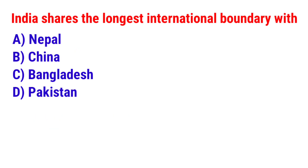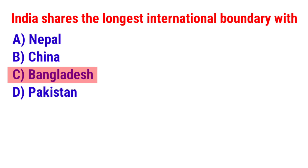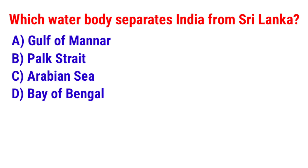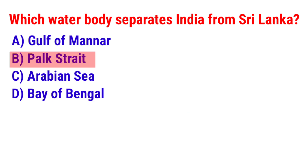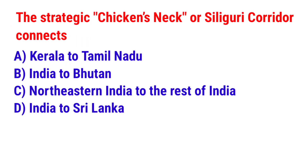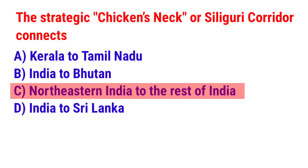Question 1: India shares the longest international boundary with? The answer is option C — Bangladesh. Question 2: Which water body separates India from Sri Lanka? The answer is option B — Palk Strait. Question 3: The strategic Chicken's Neck or Siliguri Corridor connects? The answer is option C — Northeastern India to the rest of India.